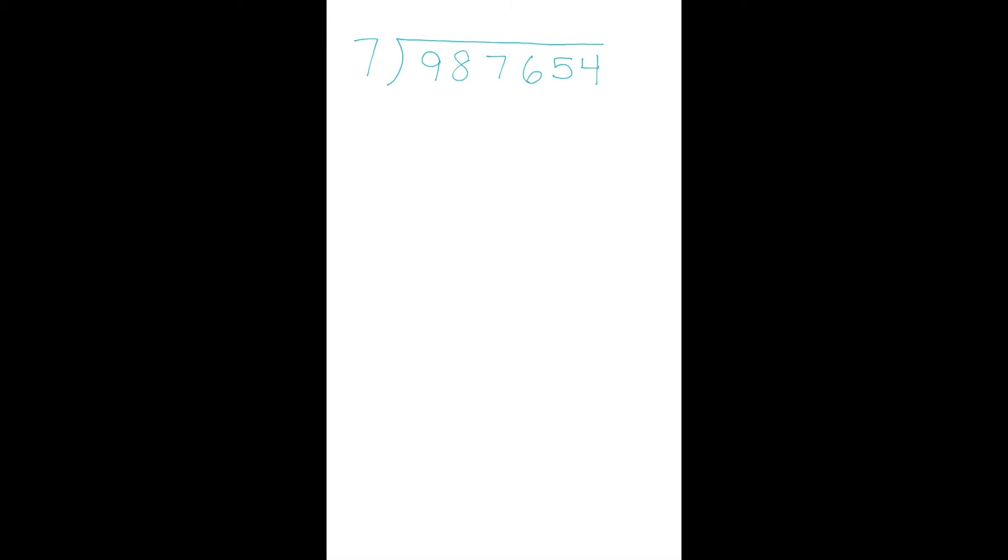We know that 9 is pretty close to 7, so that's only going to be 1. Then we multiply, 1 times 7 equals 7. Then we subtract, 9 minus 7 equals 2. Then we bring down.